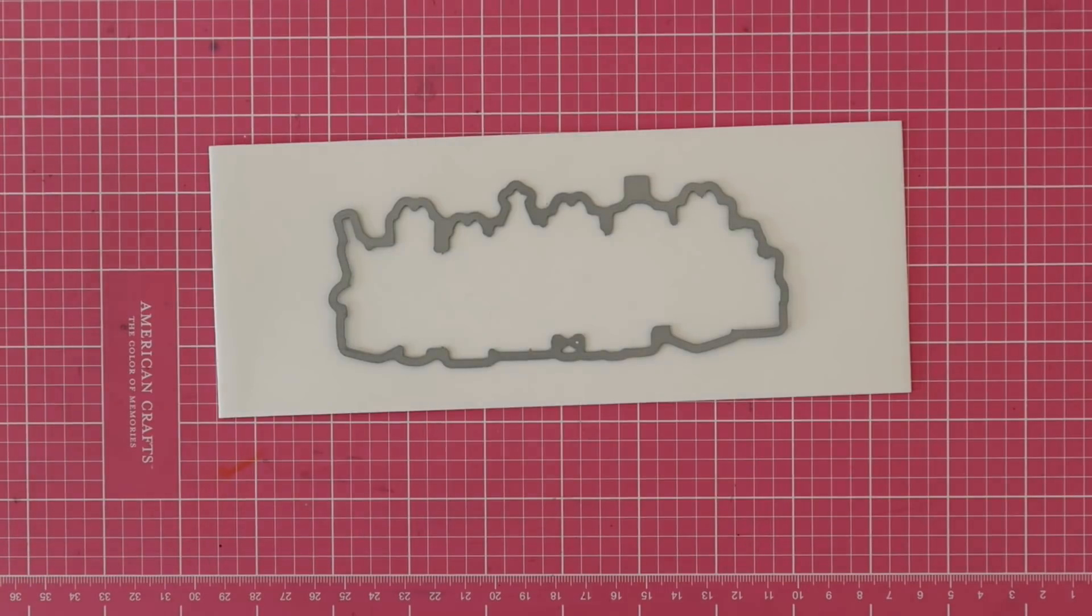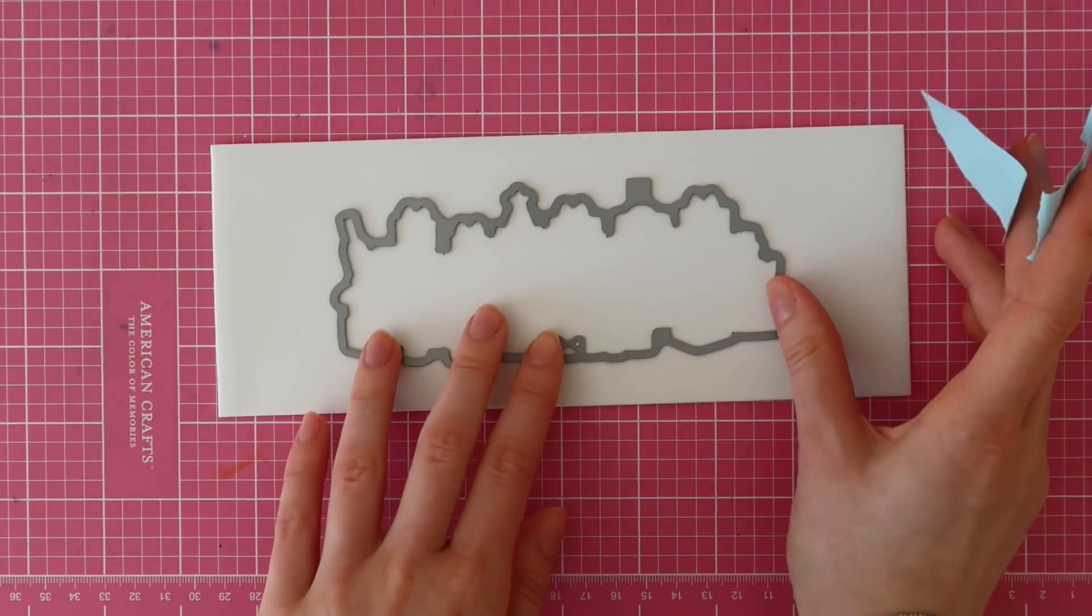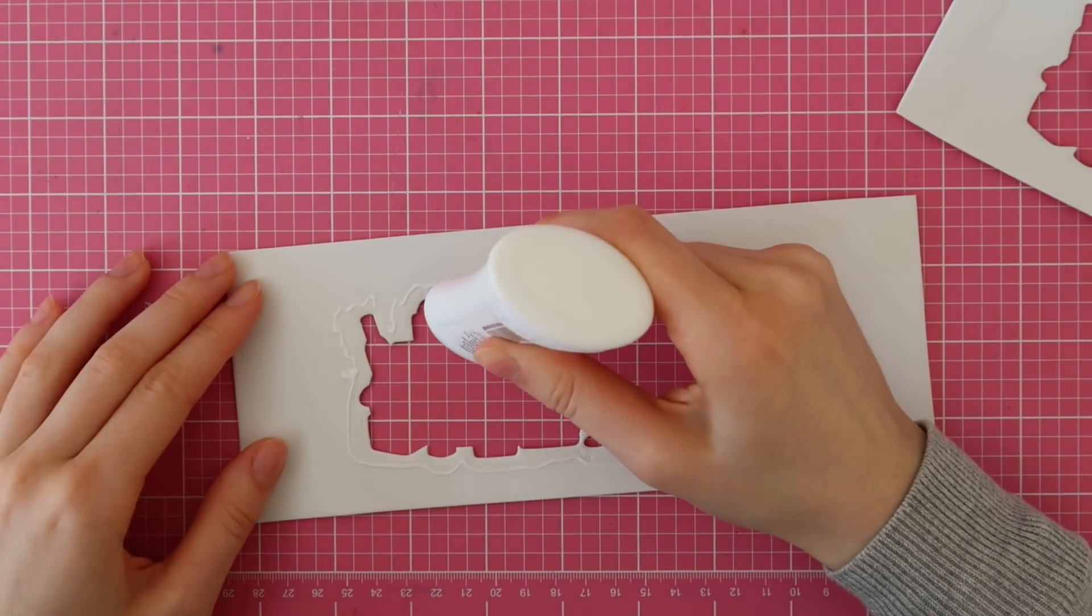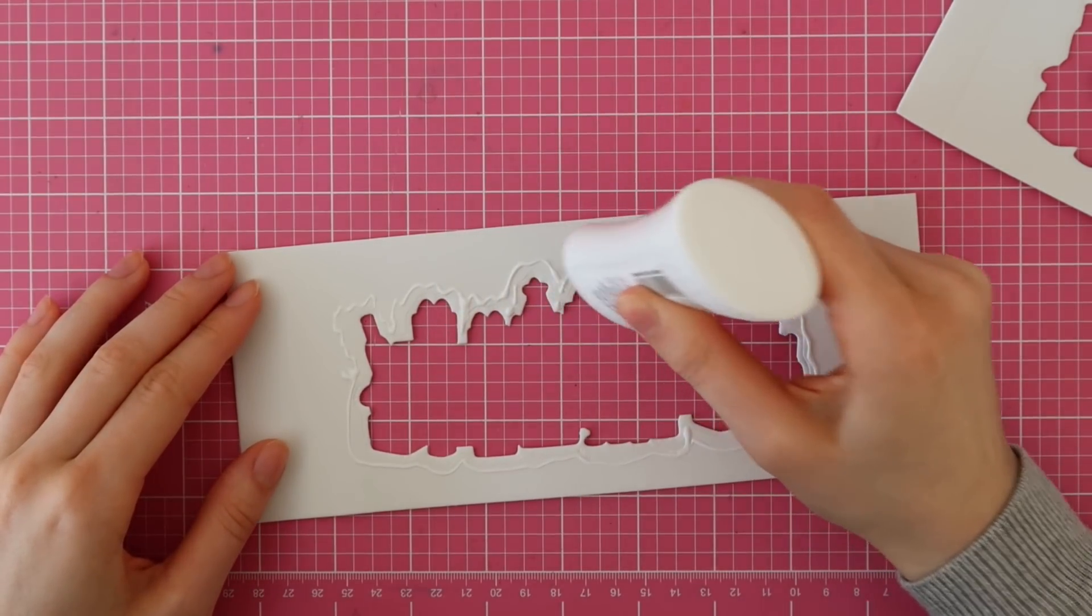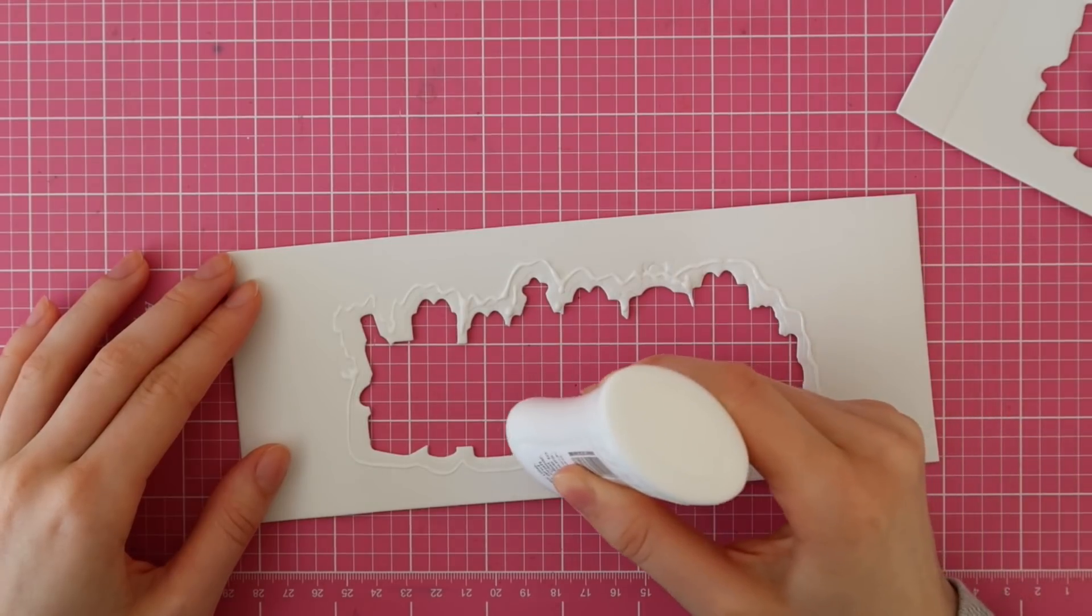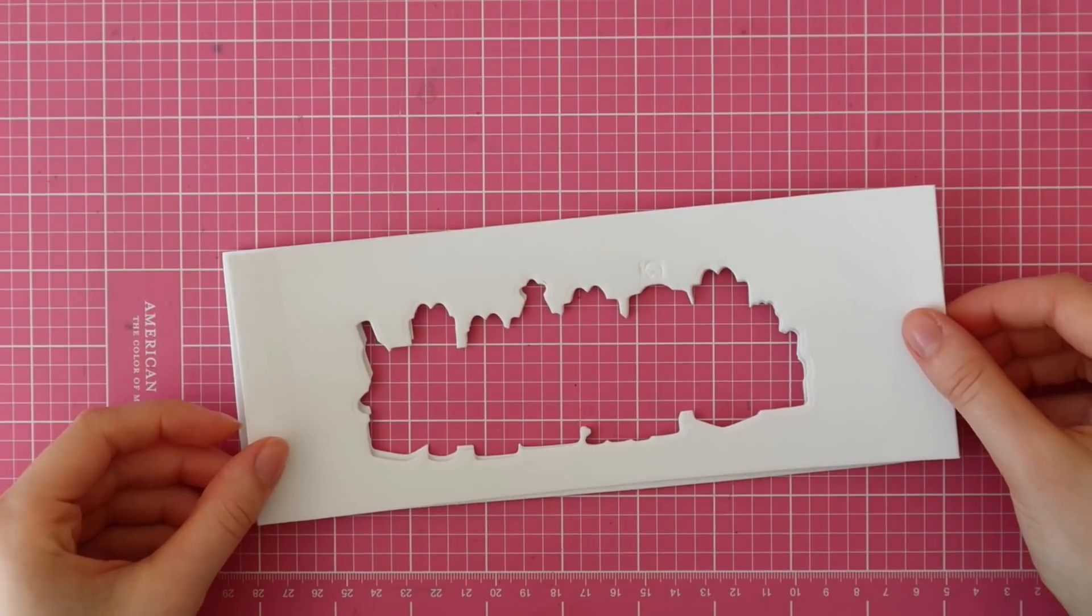Next, I'm going to use some Fun Foam as well as that coordinating die. So as you can see, I just kind of eyeballed where to die cut this piece. So I die cut that twice out of Fun Foam because I'll be doubling up these layers so that the sequins will have plenty of room to shake and move around.